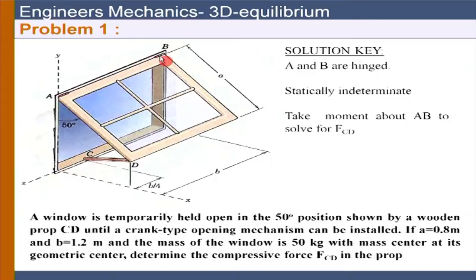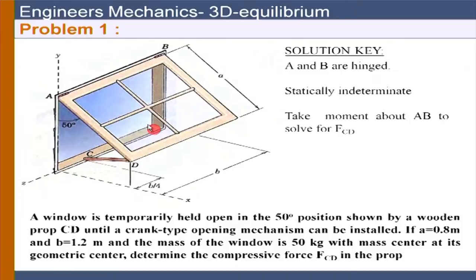The two forces contributing to the moment equation about AB are FCD and the weight. If we try moment about point A using R cross F, other reactions would enter the equation. Instead, taking the moment about the AB axis (lambda dot R cross F), no other reactions appear. Even simpler: we can find the perpendicular distances of FCD and the weight from line AB and compute moment as force times perpendicular distance.